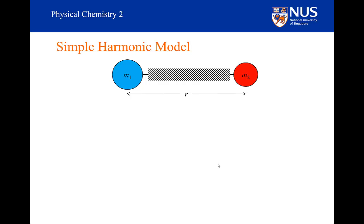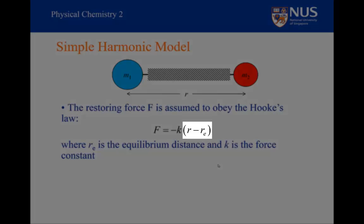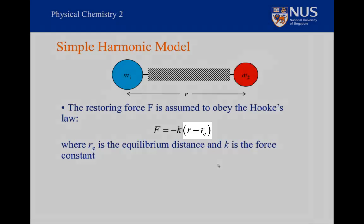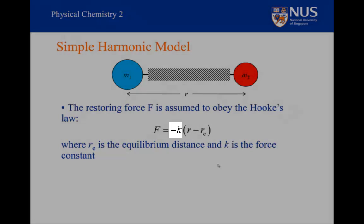So we have our simple harmonic oscillator. We have masses m1 and m2 that are a distance r apart. We assume that the restoring force is proportional to the distance away from the equilibrium bond length r sub e. The distance away from the equilibrium bond length is r minus r sub e. If the distance is longer than the equilibrium bond length, this will be positive, but the restoring force is minus k times that.